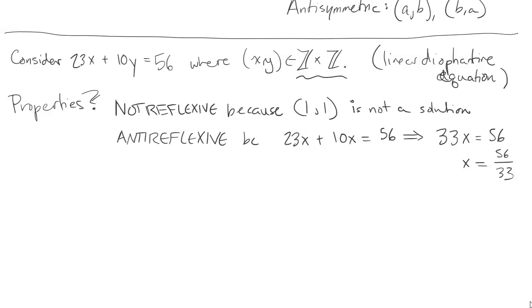Let's check out symmetry. We'd have 23x + 10y = 56 and 23y + 10x = 56. If you know anything about solving linear equations in two variables, you know we can subtract one equation from the other one. So we would end up getting 13x - 13y = 0, and that would imply that x and y are equal.